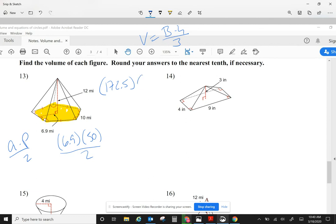The height in this case is 12, and I'll divide this by three. So the volume of this pyramid is 690.